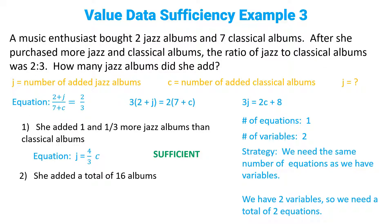Statement two says she added a total of 16 albums. In math, that means J + C = 16. We said we needed one more equation because we need a total of two equations if we have two variables, and we got one more equation. That is also sufficient. The answer in this case is D.